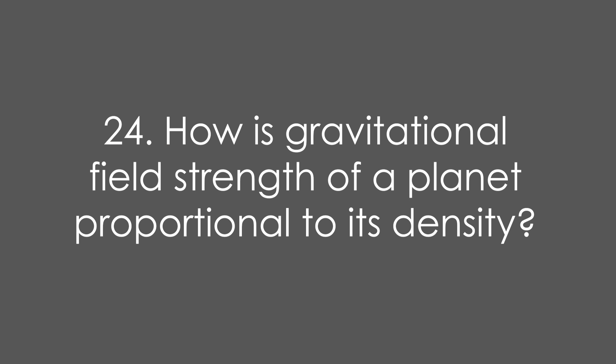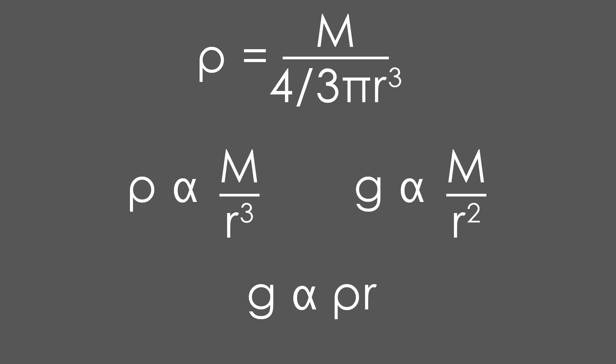Finally, twenty-four, how is gravitational field strength of a planet proportional to its density? Pretty tough one. Well, we know that density is mass divided by volume, so that's m over four-thirds π r cubed, taking out the constants, we end up with rho is proportional to m over r cubed, but we know that g, gravitational field strength, is proportional to m over r squared. Therefore, multiplying by r, g is proportional to rho r.